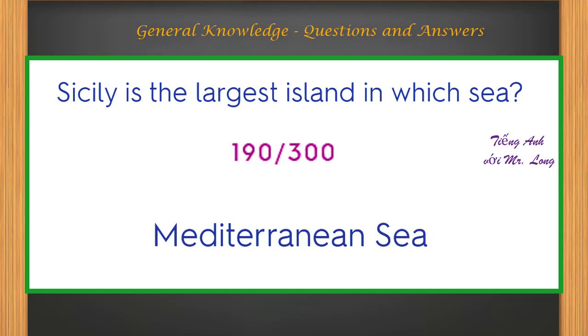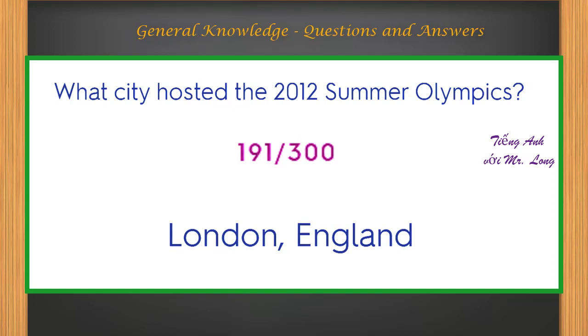Sicily is the largest island in what sea? Mediterranean Sea. What city hosted the 2012 Summer Olympics? London, England.